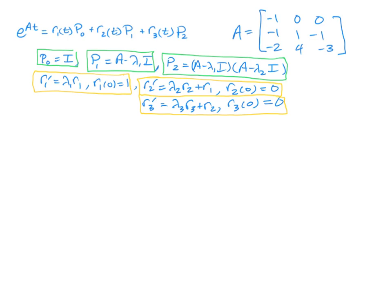The first step of this method is to make sure you understand that we need to get three matrices and three different functions. To recap those, we need to get the P's. P0 is the identity matrix. P1 is A minus lambda 1 I. And then P2 is A minus lambda 1 I times A minus lambda 2 I.